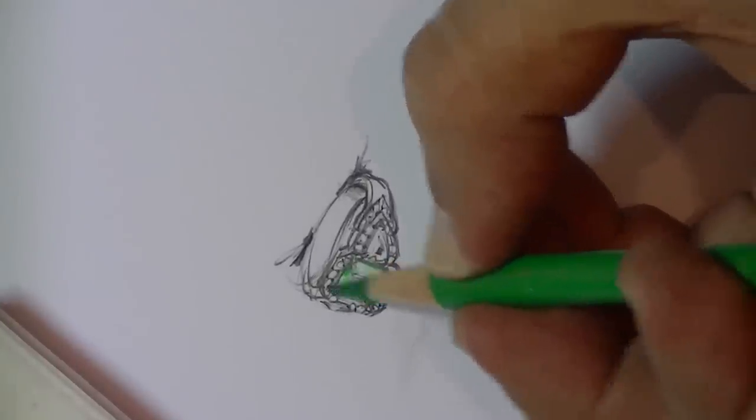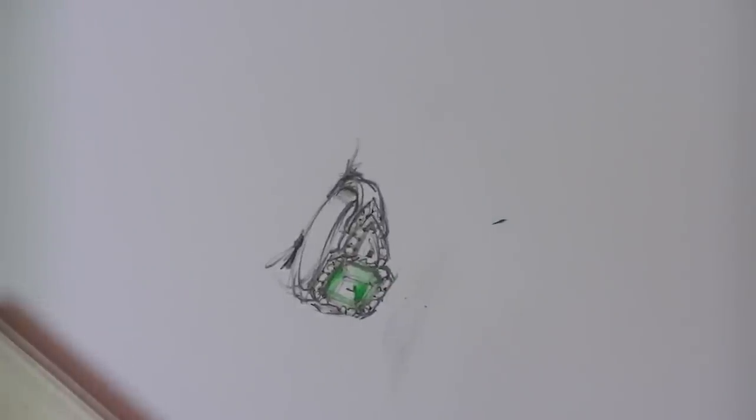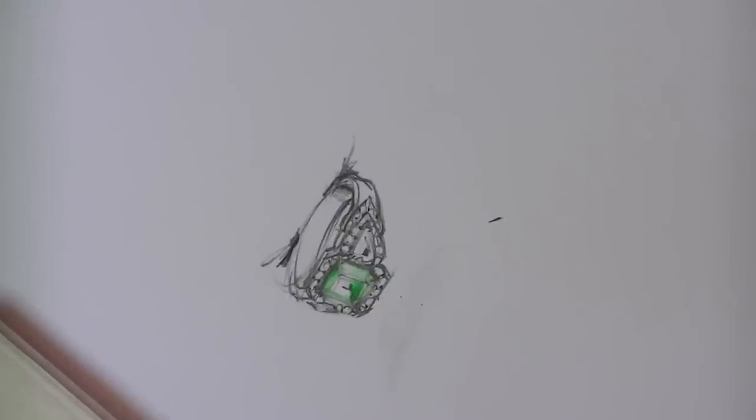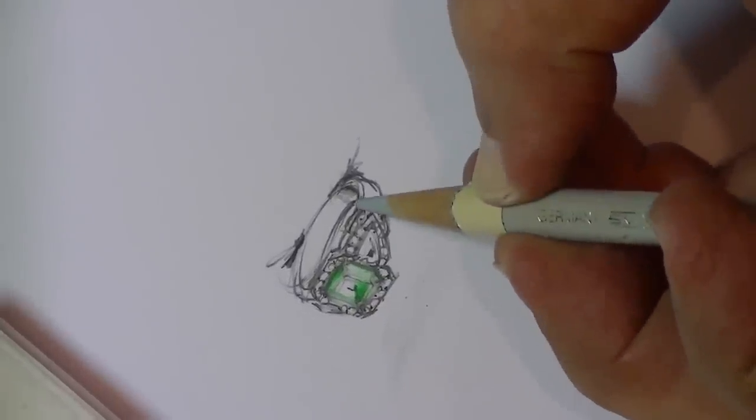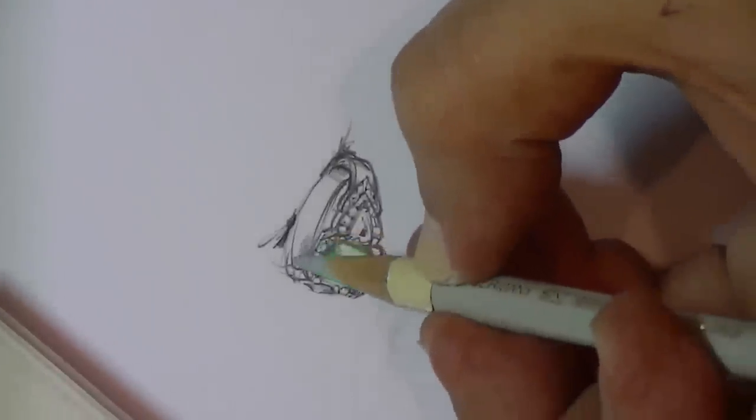I'll just work away at that a little bit. You don't need to—you just need to put a color on it. Especially when there are white stones around it, you can get a very good grasp of what the ring would look like.